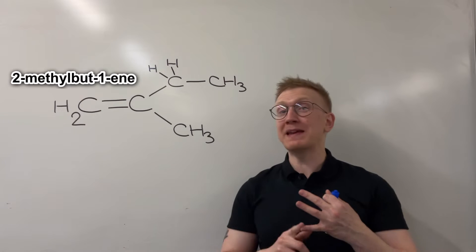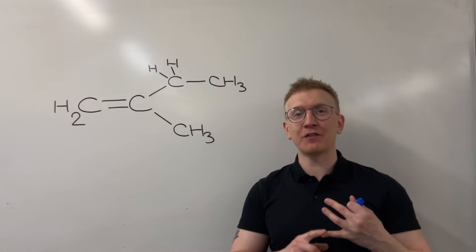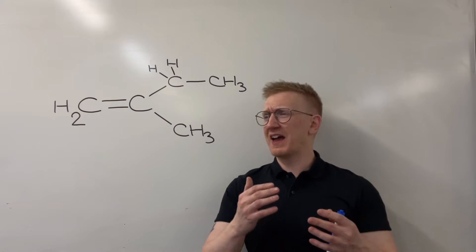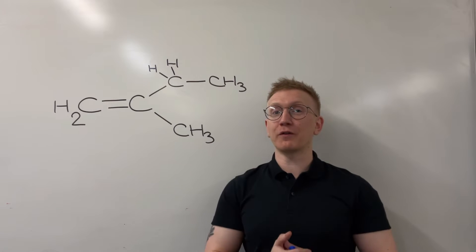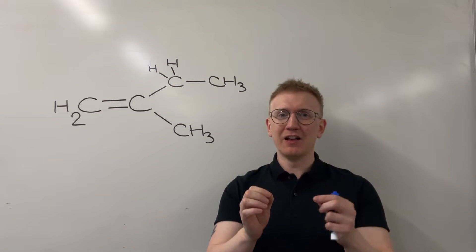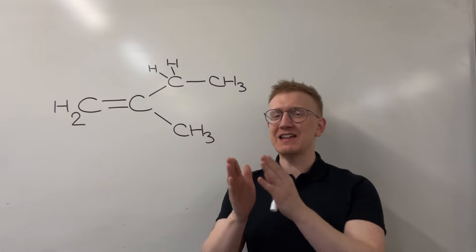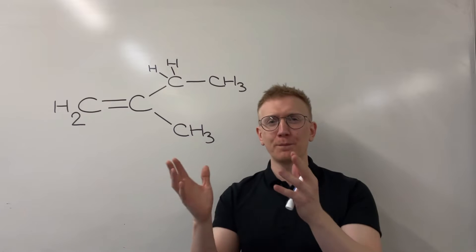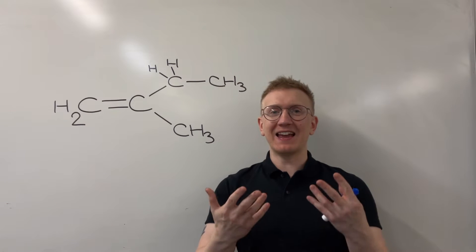First off, how many peaks do I expect to see? And that's going to be based on the number of hydrogen environments. Then I'm going to look at what's the ratio of those peaks to each other. Finally, we're going to look at that splitting pattern. So what is the splitting pattern for each individual peak into those sub-peaks that I expect to see in an exam question?